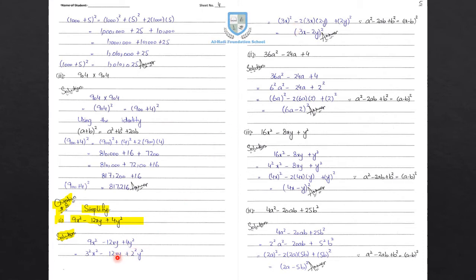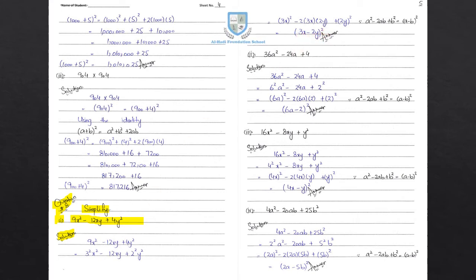Combining 3 square and x square gives 3x whole square. Breaking 12xy as 2 times 3x times 2y, plus 2y whole square. This gives a square minus 2ab plus b square form. Since a square minus 2ab plus b square equals a minus b whole square, with a equals 3x and b equals 2y, the simplified form is 3x minus 2y whole square.